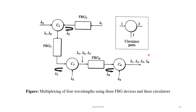So multiplexing has been achieved. The procedure done at the first stage is repeated at the second and third stages, each time adding one more wavelength to the existing one. This is the multiplexing of four wavelengths using FBG and three circulators. Thanks for joining.